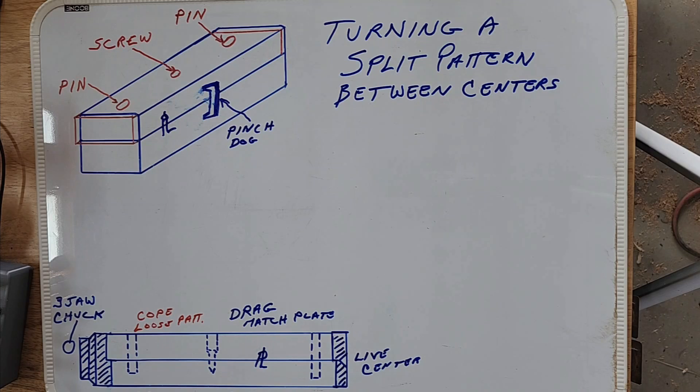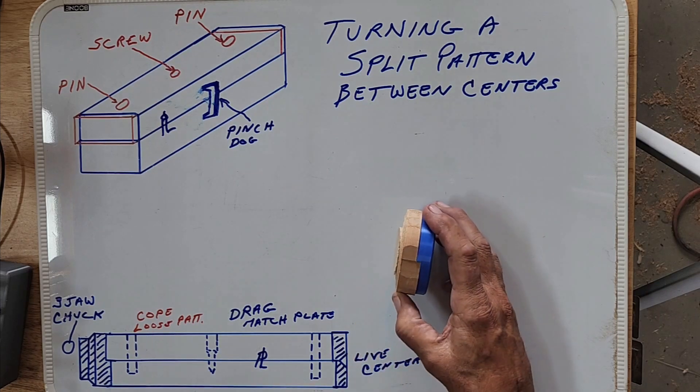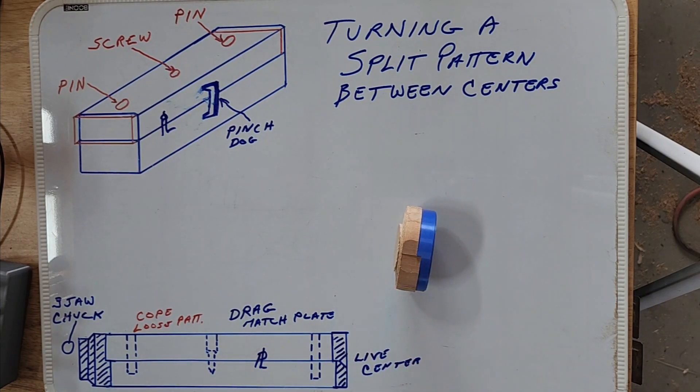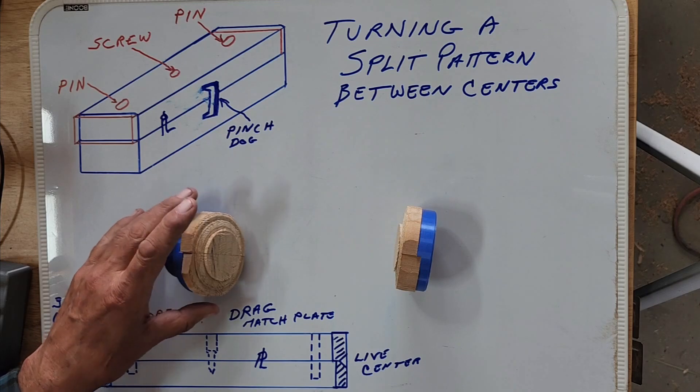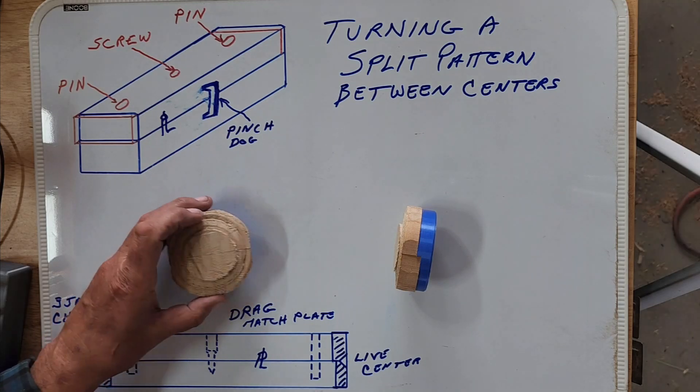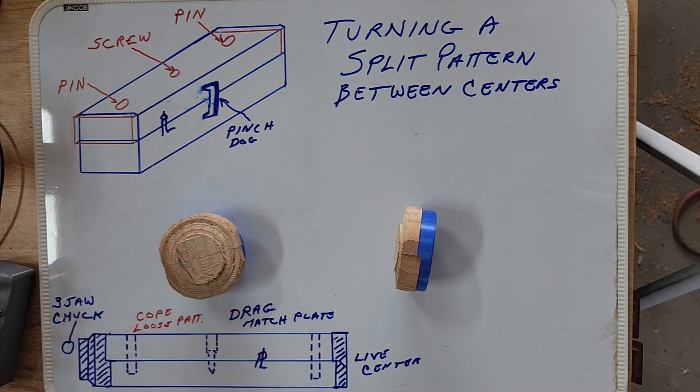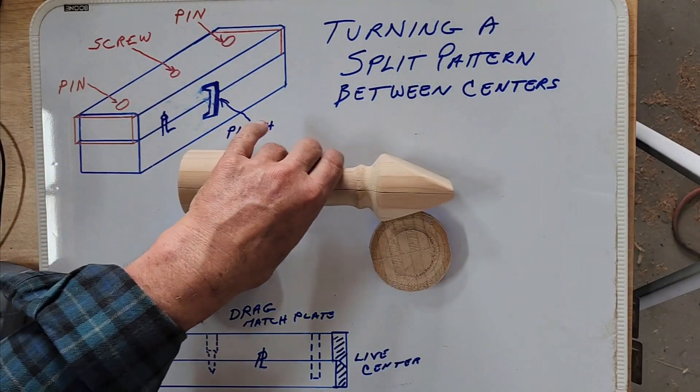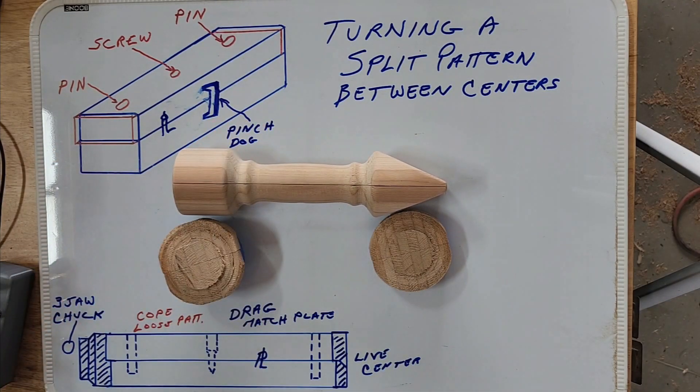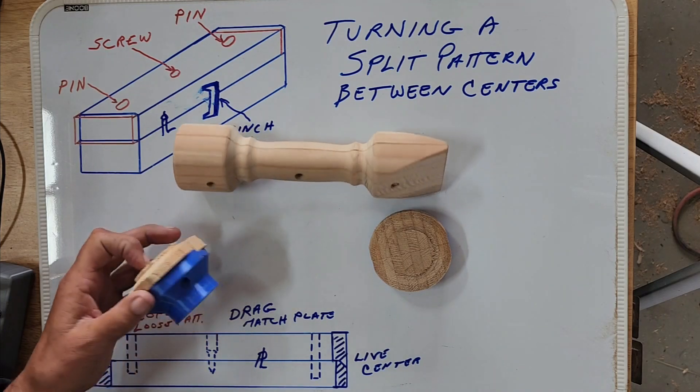A while ago I made a couple lathe centers and I was going to show you how to use them. These are the turned ends here—that's a tailstock end and this is the headstock end. I turned a silly little pattern that I'll probably end up burning anyway because it's too short, but that's the distance I had between centers. I'm going to make a change to this end.